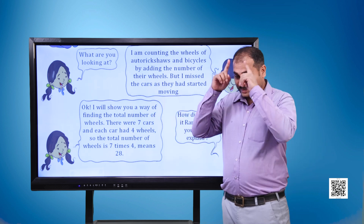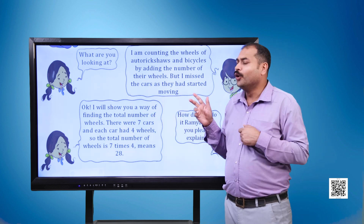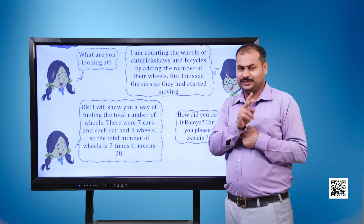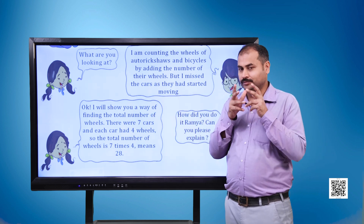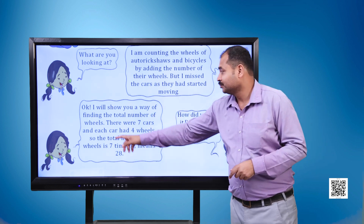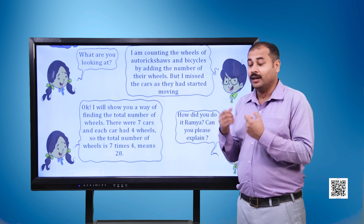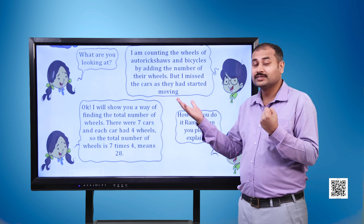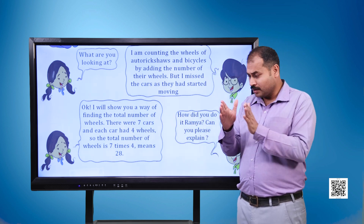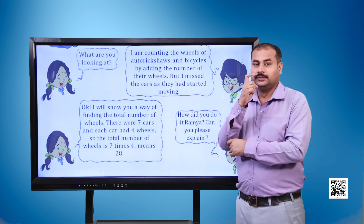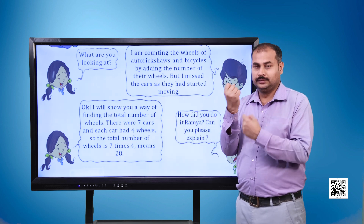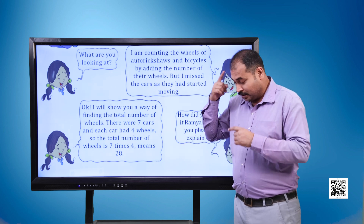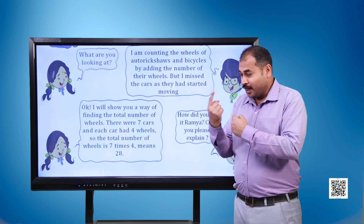The girl says, 'Okay, I will show you a way of finding the total number of wheels. There were 7 cars and each car had 4 wheels. So the total number of wheels is 7 times 4, which means 28.'